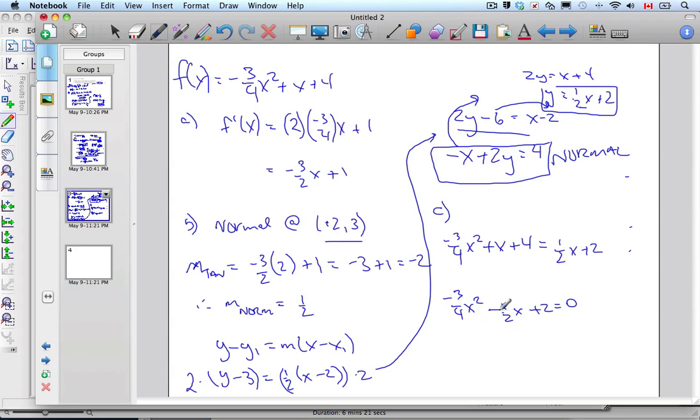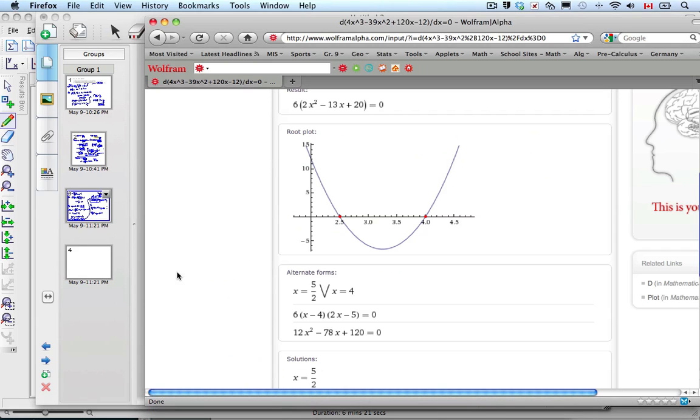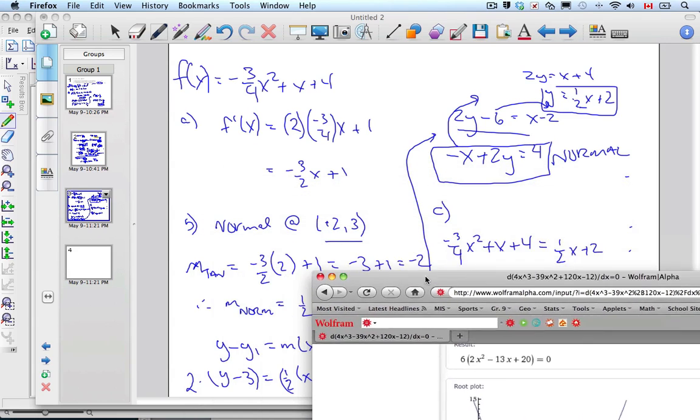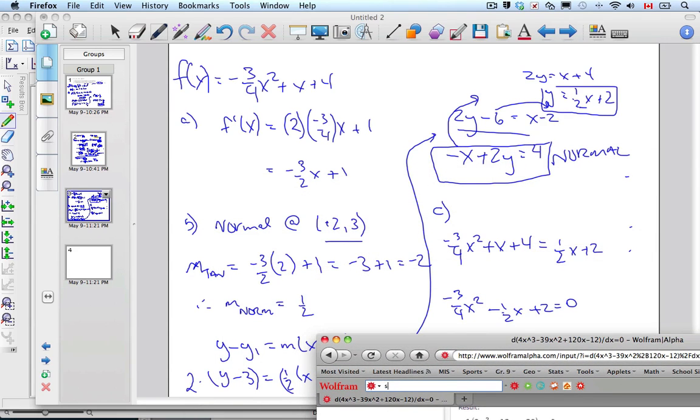Now, I could try and factor this, or I could graph it on my calculator. I don't have my calculator handy. So, let's go to Wolfram Alpha. And let's ask Wolfram Alpha to do it for us. We want to simply solve negative 0.75x to the power 2 minus 0.5x plus 2 equals 0. And hit enter.